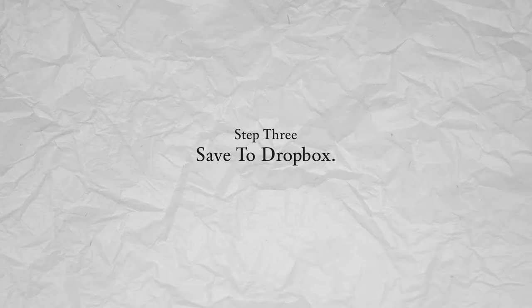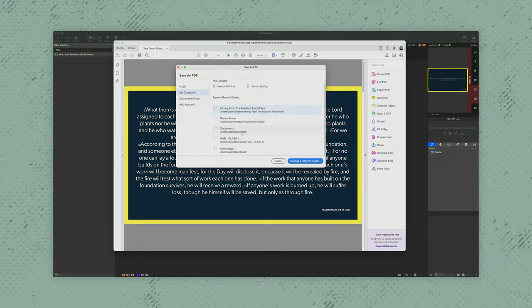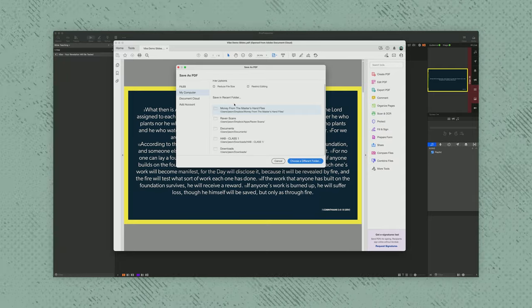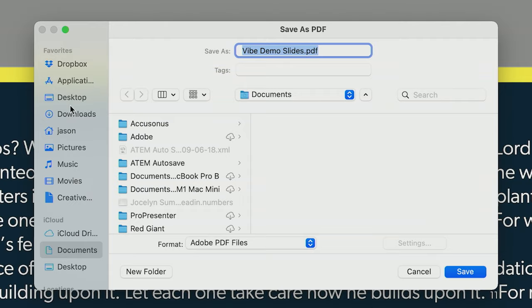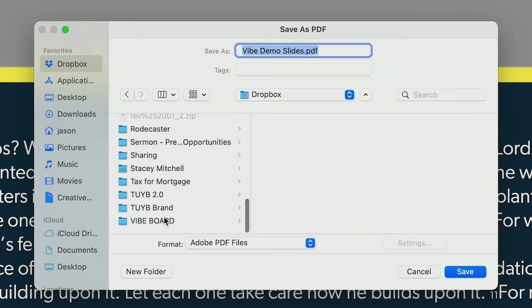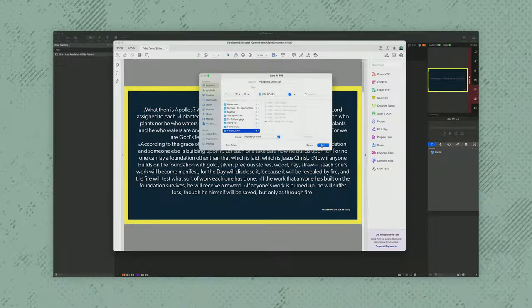Step 3: Save to Dropbox. I've found that Dropbox is the easiest way to transfer this PDF to the Vibe Board. I always include Vibe in the file name and put the presentation inside a Vibe folder so it's always super easy to find.